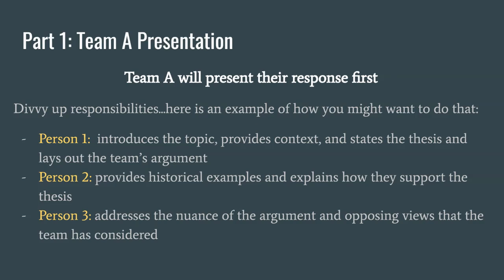Person two might be the body paragraph person, providing a couple of historical examples and explaining how those examples support the thesis laid out by person one. Then person three might be the counter-argument person — addressing the nuance of your position, showing that you have thought deeply and recognize the complexities involved. It shows that you've thought about what other people might think, that you've concluded something but recognize there are other views that you've considered. Those are all things we'll be looking for on the rubric.